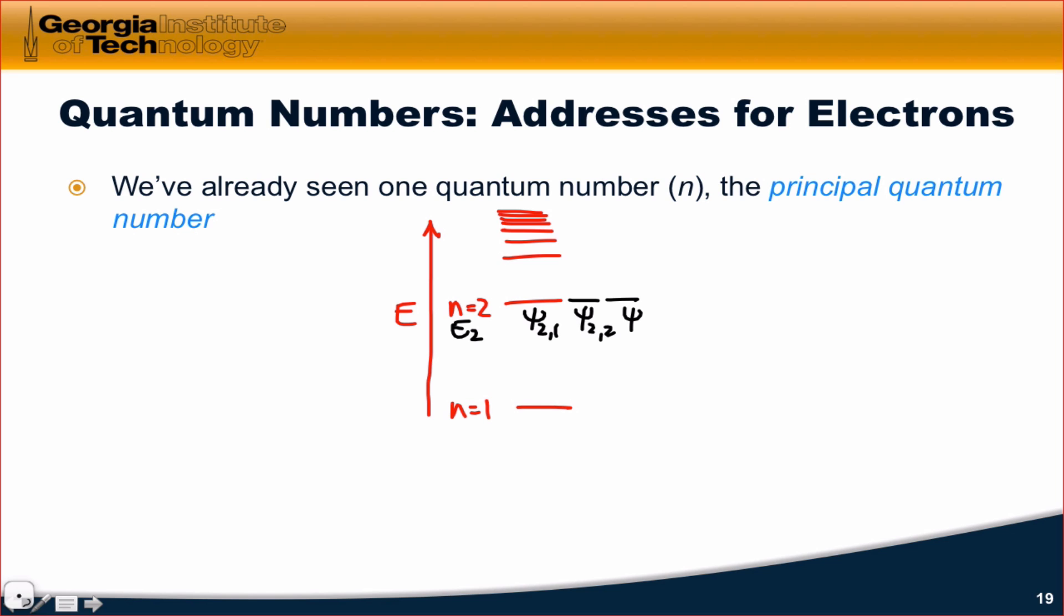and psi 2, 3, just to use a very basic index that all fit the Schrödinger equation. And these allowed wave functions themselves fit patterns that are reflected by other quantum numbers. So psi we can think of as a function of multiple quantum numbers other than just n.